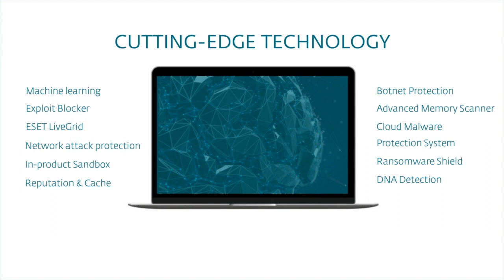We are also looking at various stages when an item is arriving in your system. Machine learning is one thing, but we are also looking in memory at what things are doing there and what they want to touch. We are also evaluating items via our cloud library. So there are many behaviors of malware that we are focusing on — that's why we have ransomware shield, for example, or reputation. We are trying to have the map as accurate as possible and use as many technologies to protect users and businesses as possible.